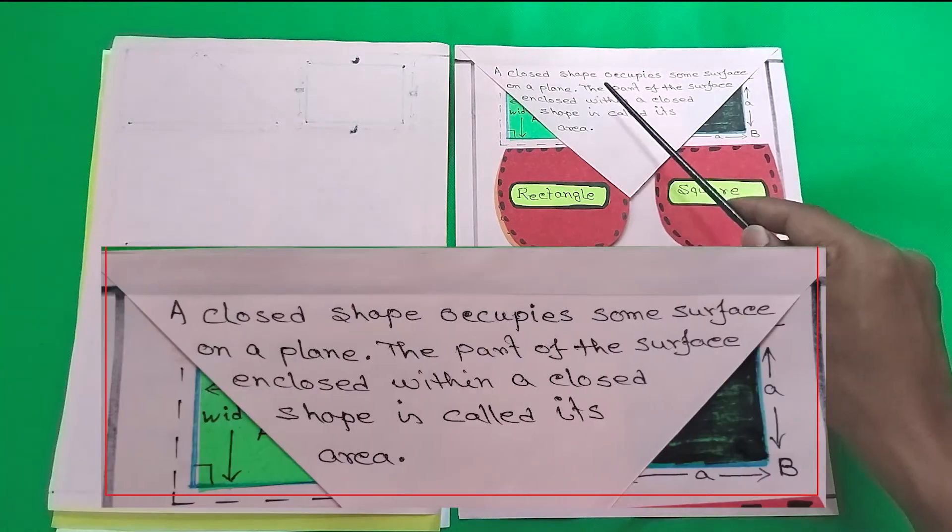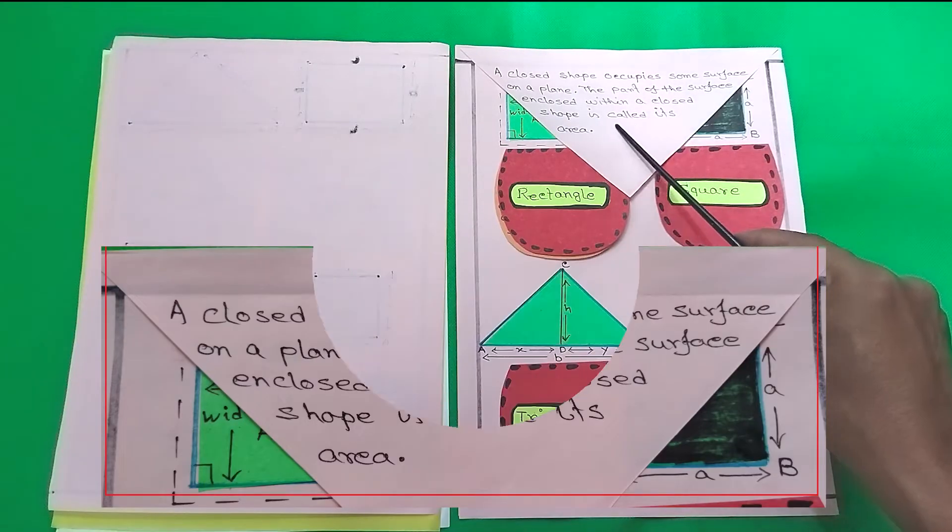A closed shape occupies some surface on a plane. The part of the surface enclosed within a closed shape is called the area.